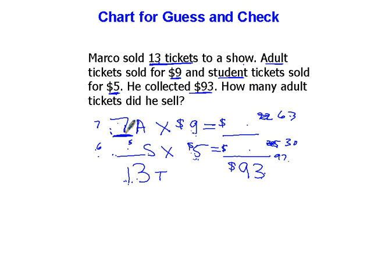So I know my answer is 7 here, 6 here. 7 times 9 is 63. 6 times 5 is 30. 63 plus 30 equals 93. The question then says, how many adult tickets? The answer is right there, 7 adult tickets is my answer.